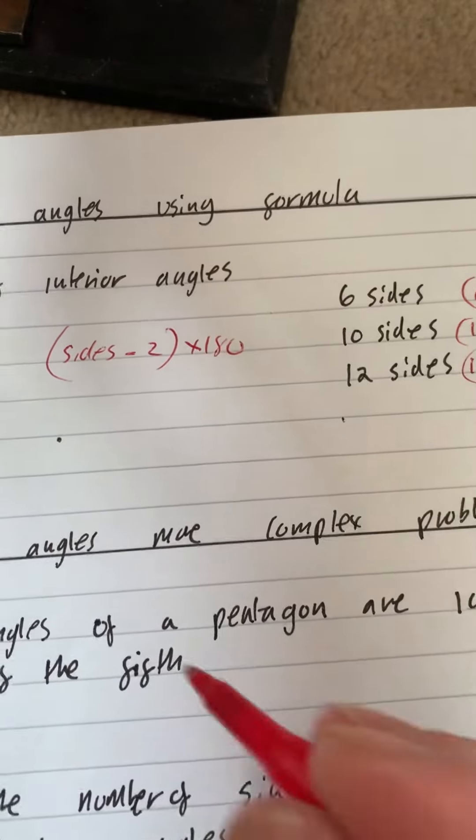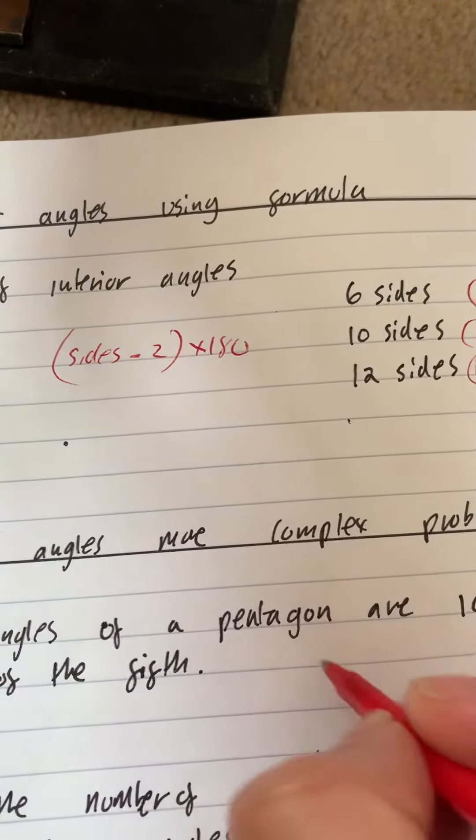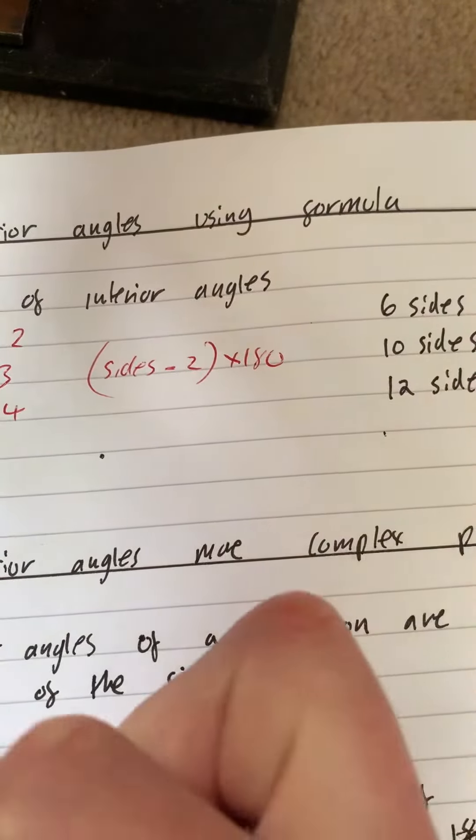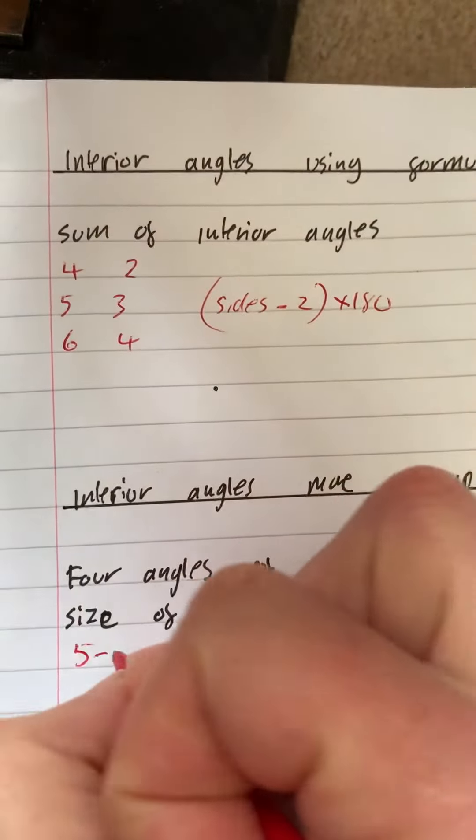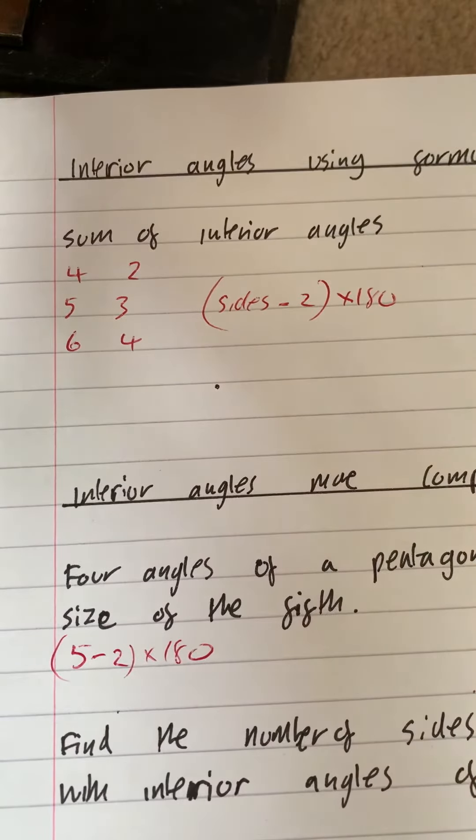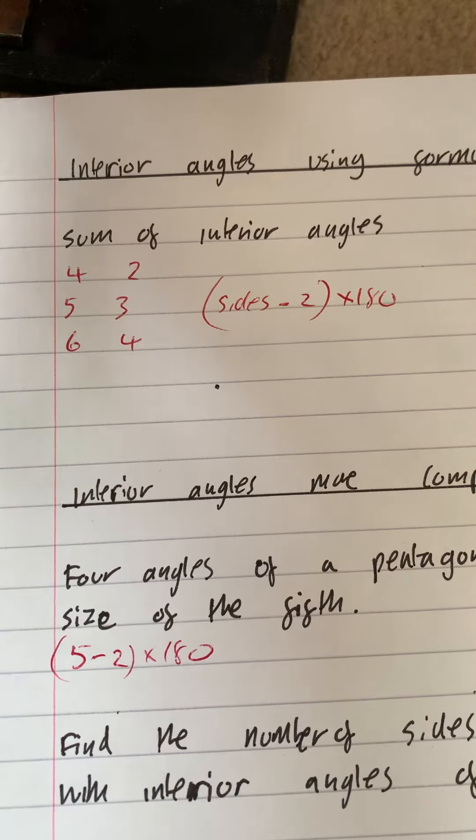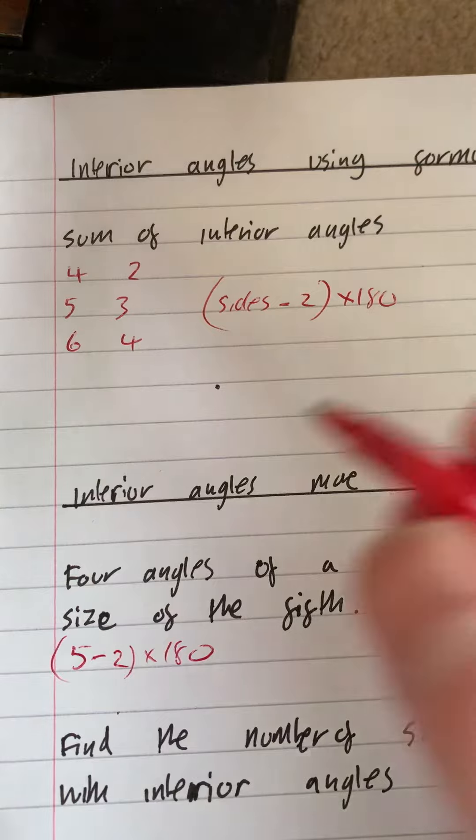The first thing we need to do is work out the total for the pentagon. Now, the pentagon has five sides, so we need to take away two, now we times by 180. So, three times 180 equals 540.